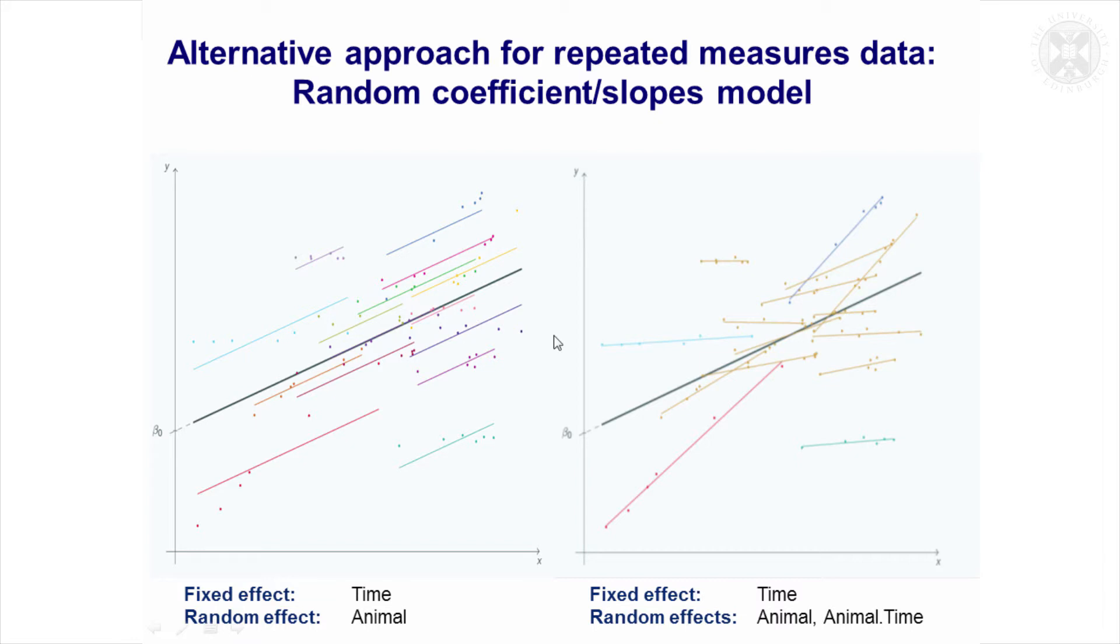Just to mention another alternative way of analyzing repeated measures data - and this is particularly useful if you've got different time points for your measurements - is something called a random coefficient or random slopes model.